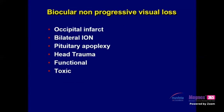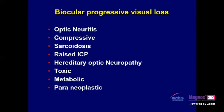Binocular non-progressive visual loss: occipital infarct, bilateral optic neuropathy, pituitary apoplexy, head trauma, functional, and toxic causes. Binocular progressive visual loss: optic neuritis, compressive causes, raised ICP, hereditary optic neuropathy, toxic, metabolic, and paraneoplastic causes. These are the common causes of visual impairment.